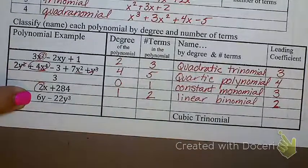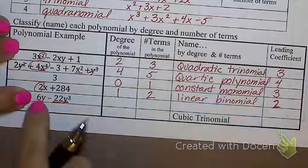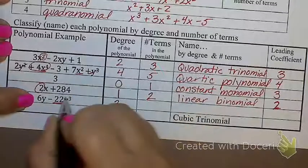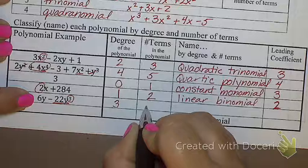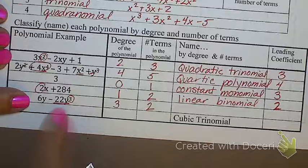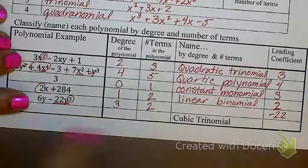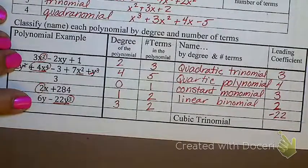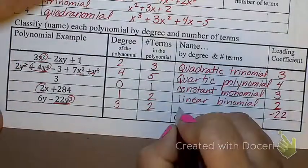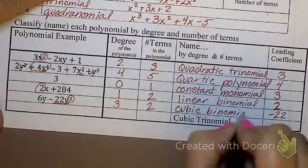And down here, is this one in standard form? No, because the higher exponent is coming last. So it would have to be flipped around to be standard form. What's the degree? Three, because that's my highest exponent. How many terms? Two terms. Six y is one term. Negative 22 y to the third is the second term. And what's my leading coefficient? Negative 22. Because again, even though this isn't written in standard form, it's whatever would be written first in standard form. So what do I have? A degree of three and two terms? A cubic binomial.